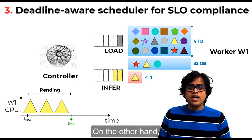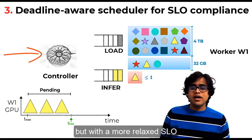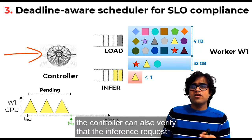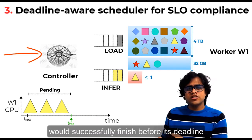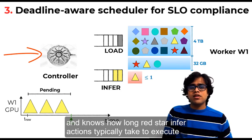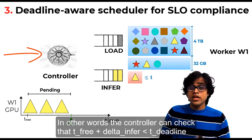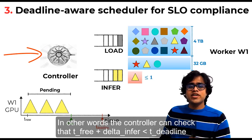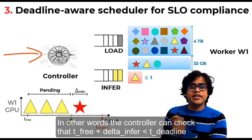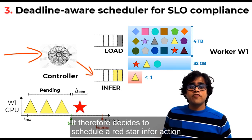On the other hand, now suppose that an inference request for red star arrives but with a more relaxed SLO. The controller can also verify that the inference request would successfully finish before its deadline, since the controller knows t_free and knows how long red star infer actions typically take to execute. In other words, the controller can check that time t_free plus delta_infer is less than time t_deadline. It therefore decides to schedule a red star infer action.